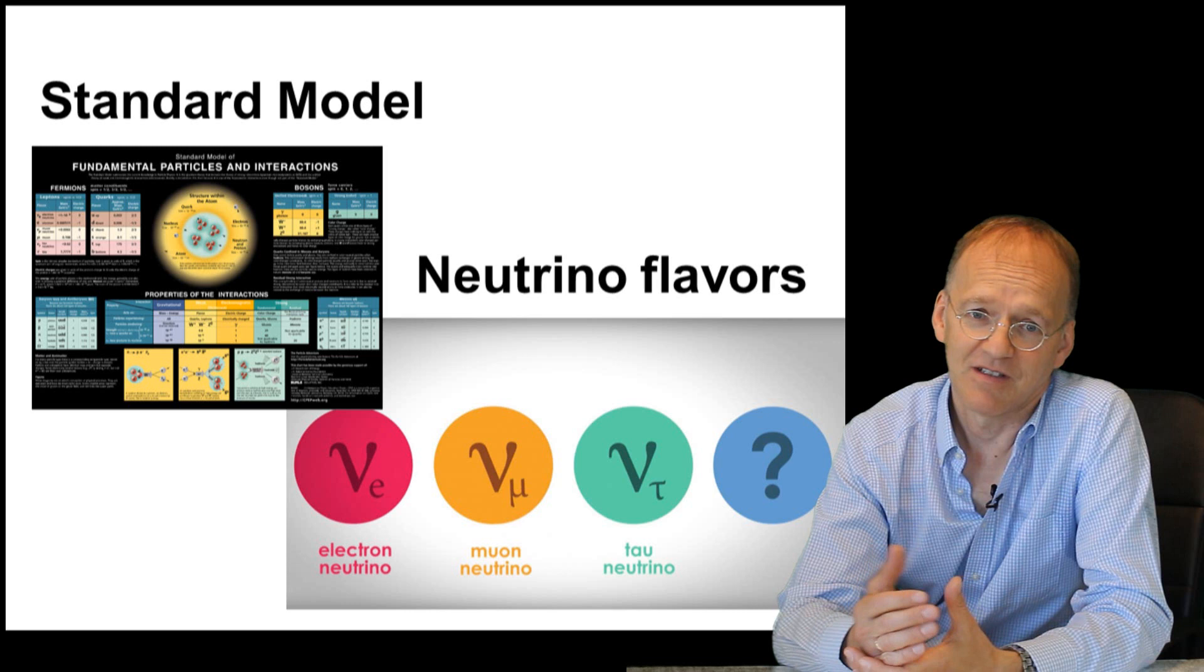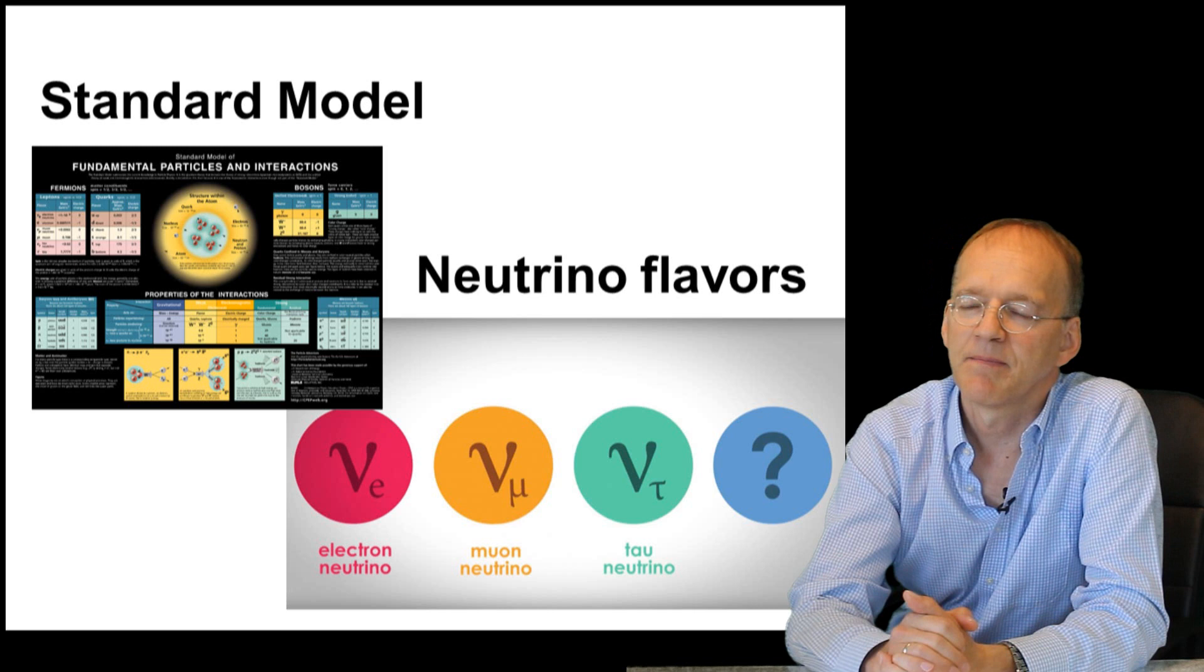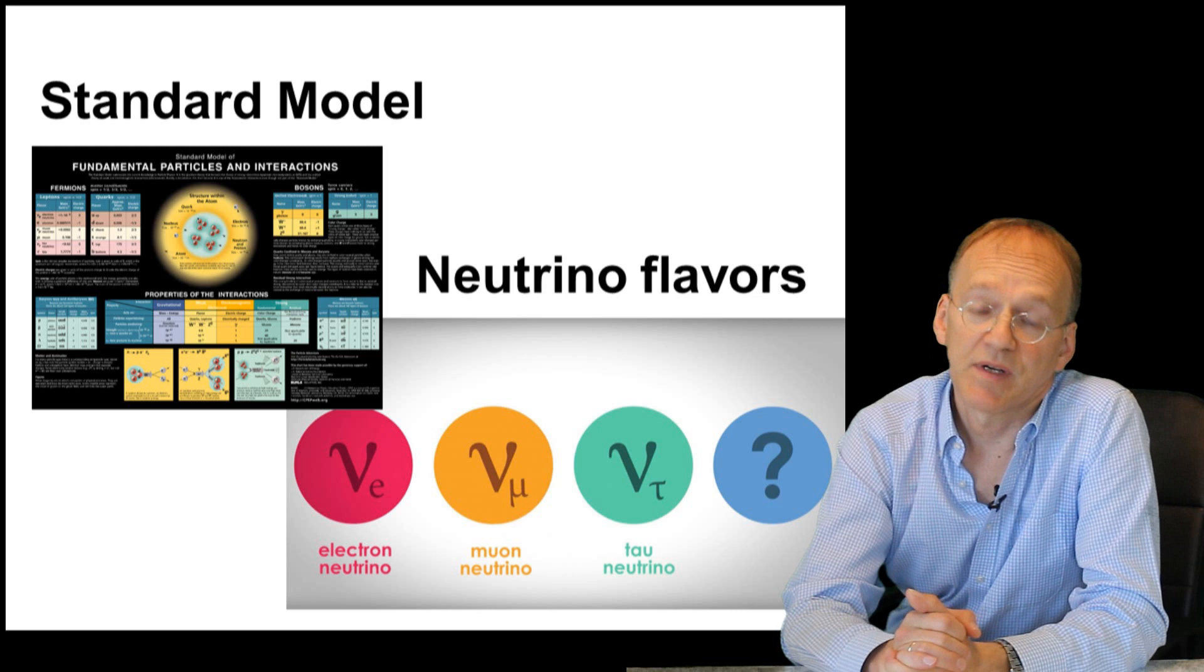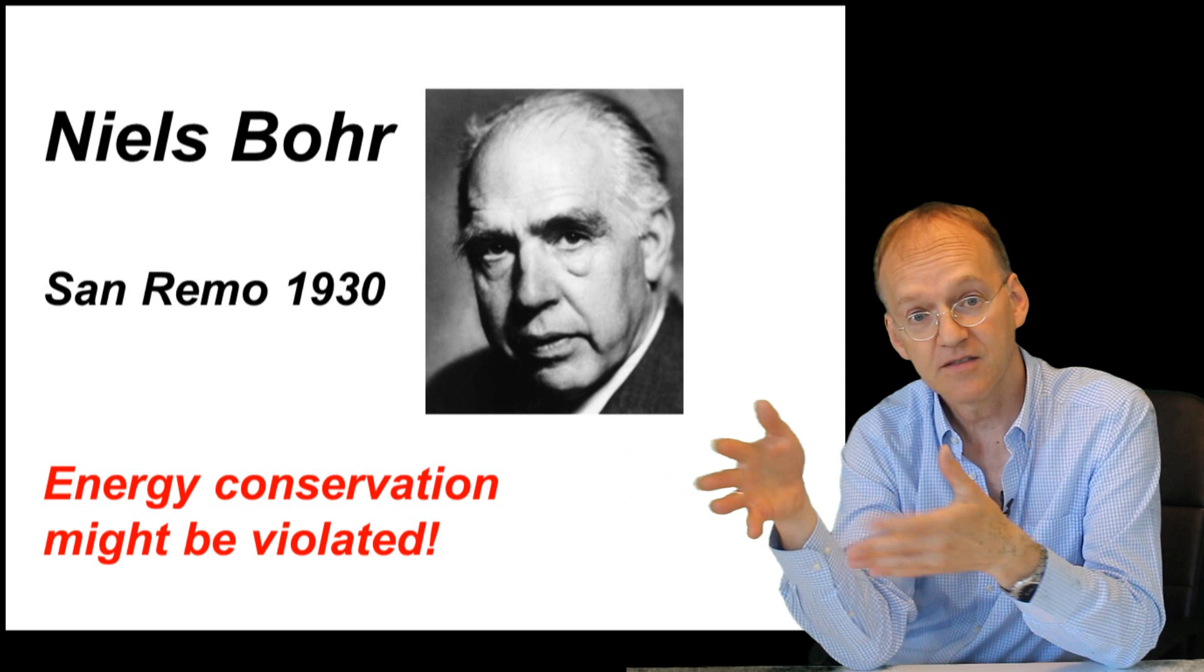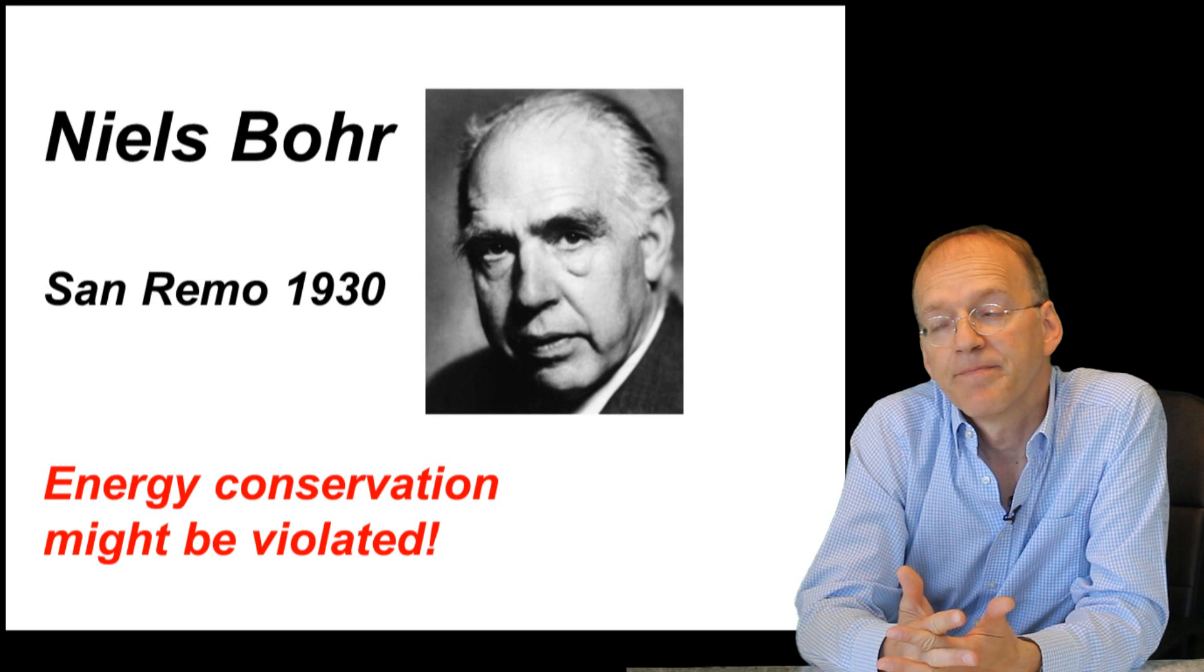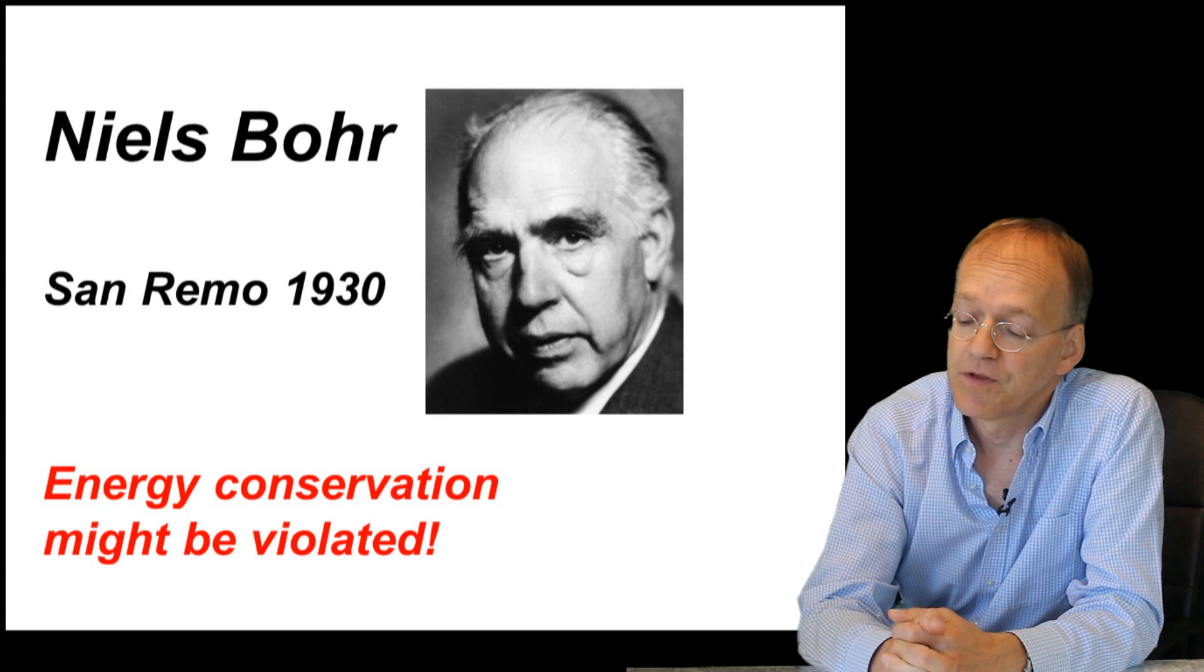So I think that physics has gone astray back then. And I have some sympathy for an idea of Niels Bohr, expressed at a conference in San Remo in 1930. And he said something very controversial. Energy might be violated. We were talking about the energy loss during the beta decay. And he said, well, who says that energy is conserved? There was an outcry and the idea wasn't developed any further.